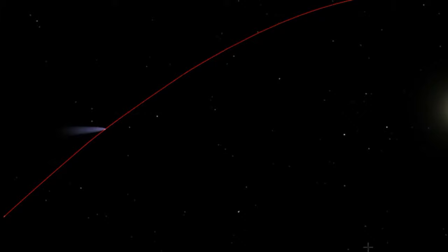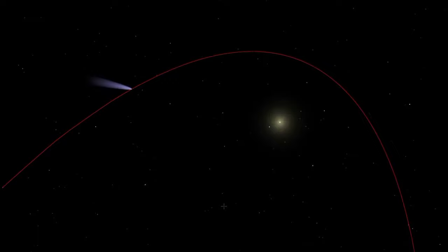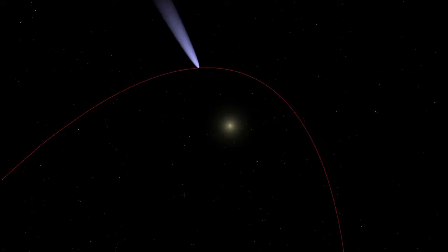The short period comets are thought to originate in the Kuiper belt. The long period comets which complete their orbit around the Sun in a few thousand years are thought to originate in the Oort cloud.